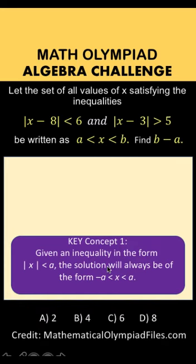Let's apply this to simplify |x - 8| < 6. Applying key concept 1, we can remove the absolute value and write that the expression inside is between negative 6 and positive 6.